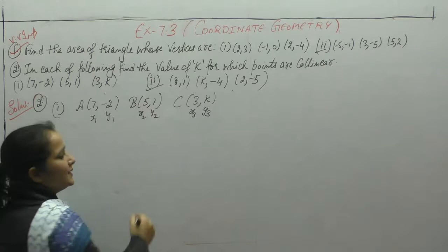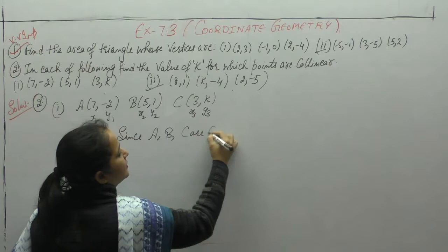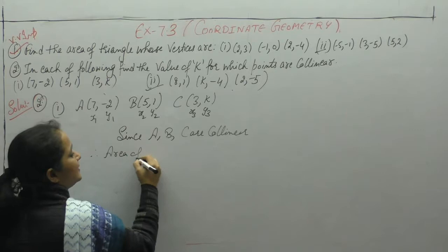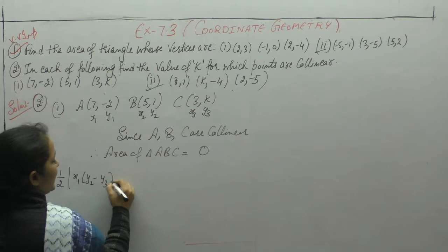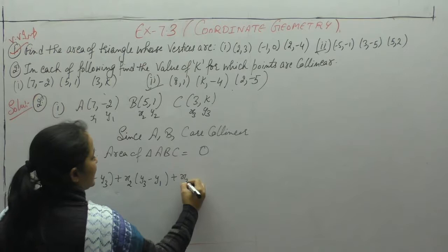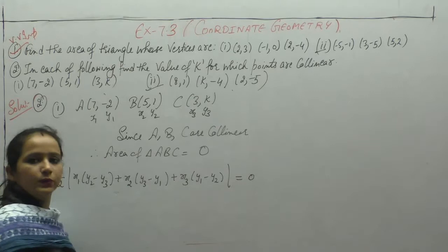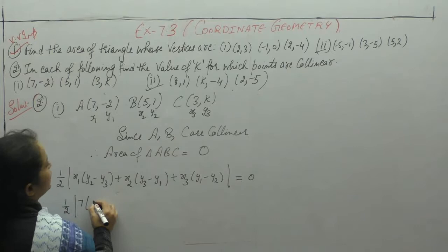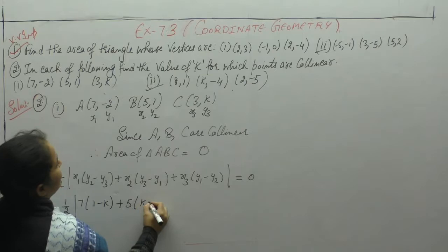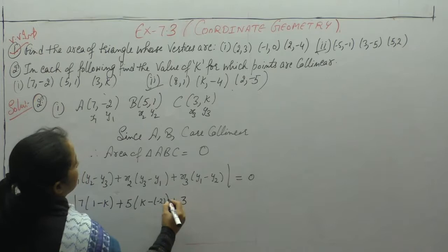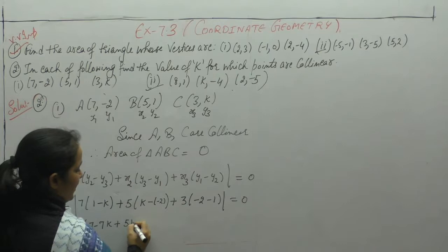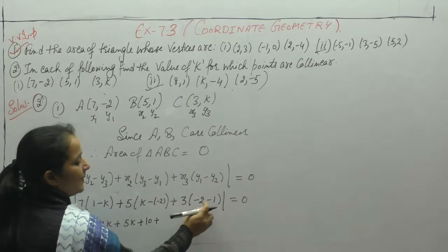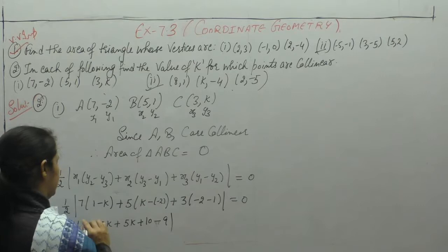Since ABC are collinear, therefore area of triangle ABC is equal to 0. Area of triangle का formula apply करेंगे: half of X1(Y2 minus Y3) plus X2(Y3 minus Y1) plus X3(Y1 minus Y2) equals 0. Now putting values: 7(1 minus K) plus 5(K minus minus 2) plus 3(minus 2 minus 1) equals 0, giving 7 minus 7K plus 5K plus 10 minus 9 equals 0.